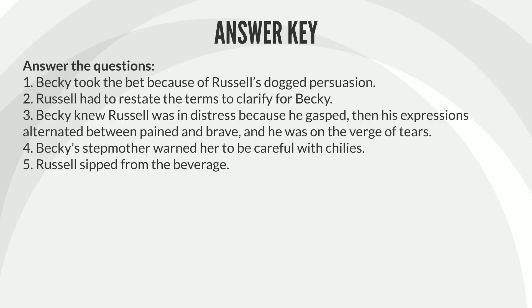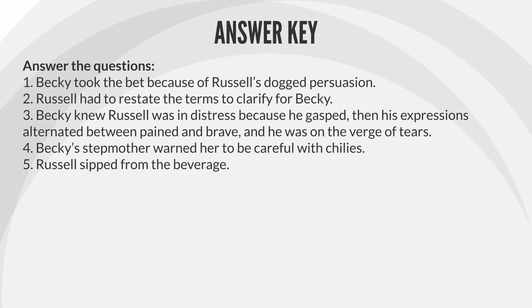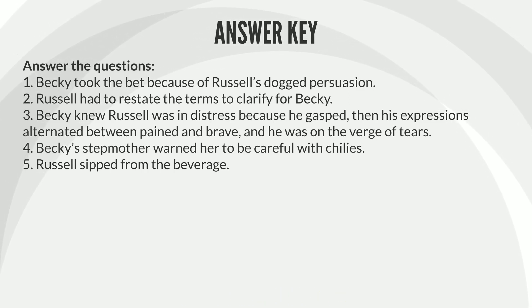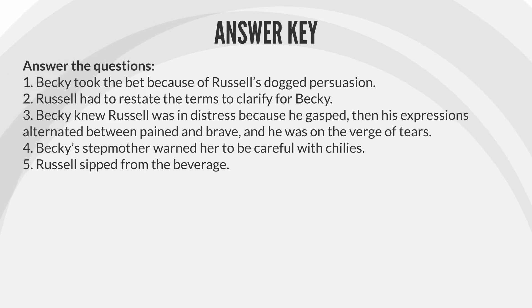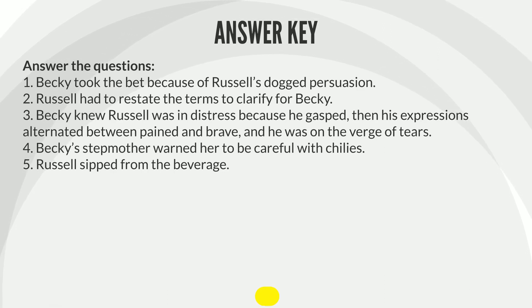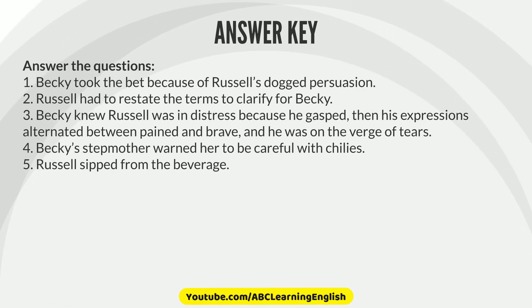Answer key. Answer the questions. 1. Becky took the bet because of Russell's dogged persuasion. 2. Russell had to restate the terms to clarify for Becky. 3. Becky knew Russell was in distress because he gasped, then his expressions alternated between pained and brave, and he was on the verge of tears. 4. Becky's stepmother warned her to be careful with chilies. 5. Russell sipped from the beverage.